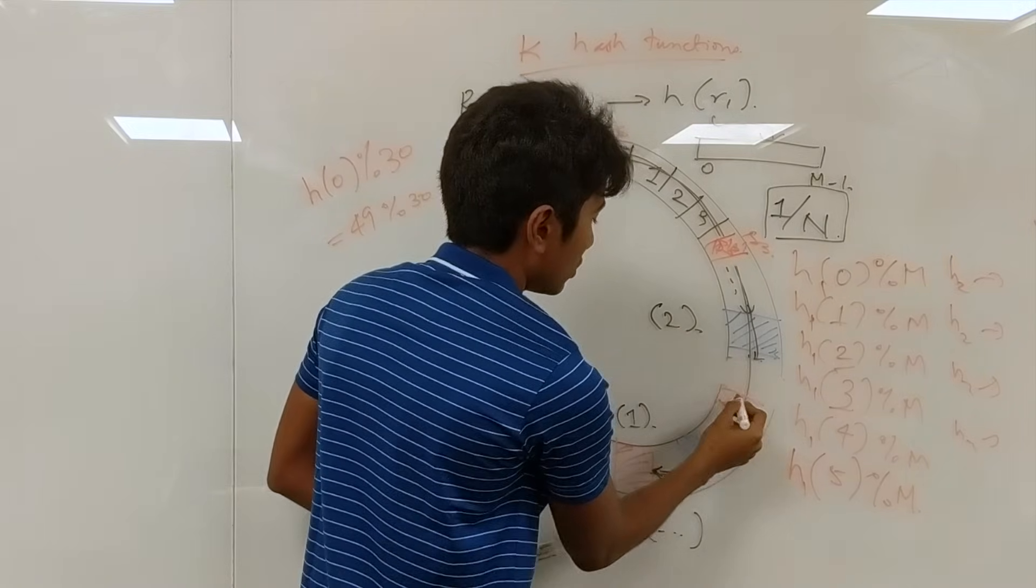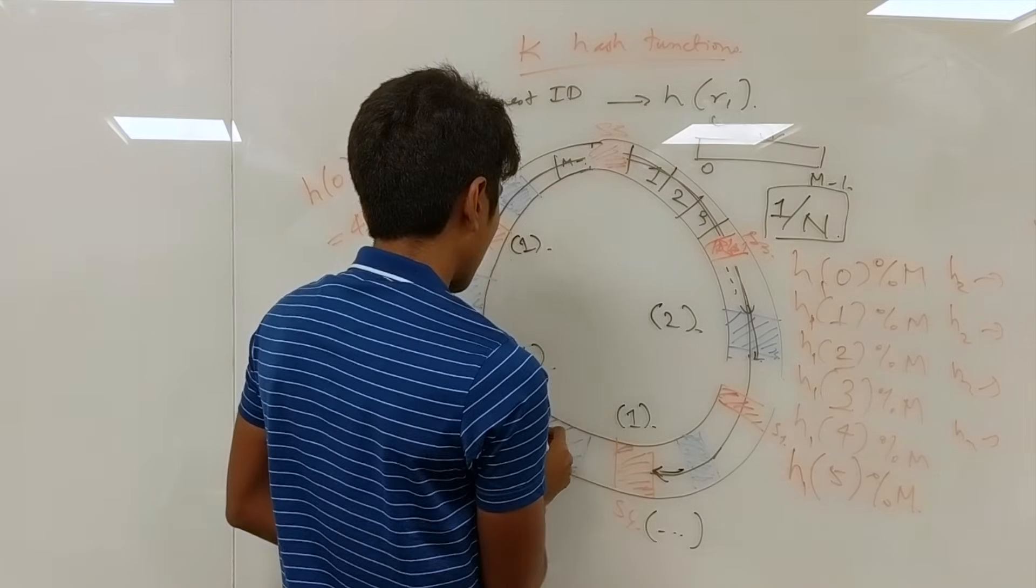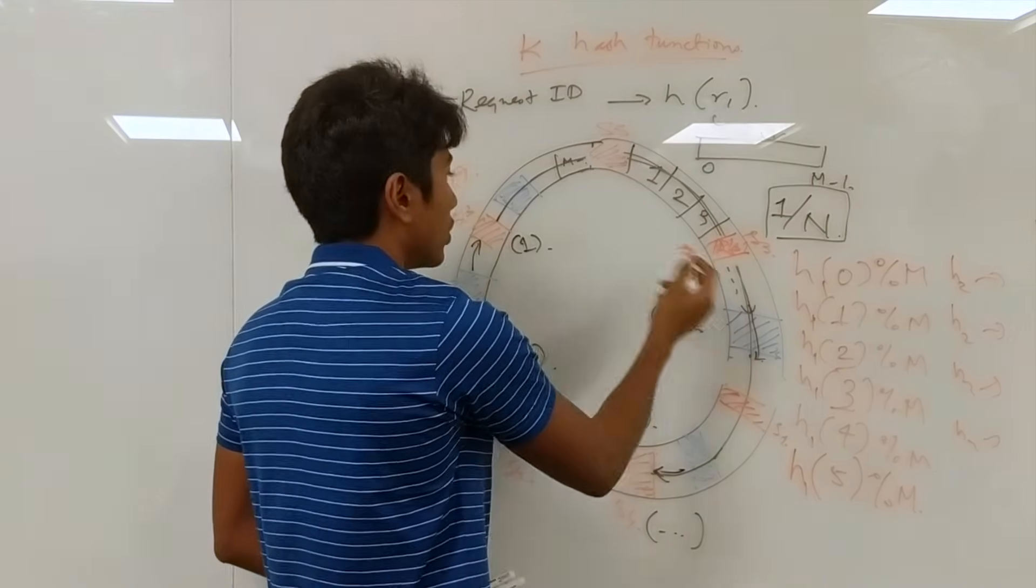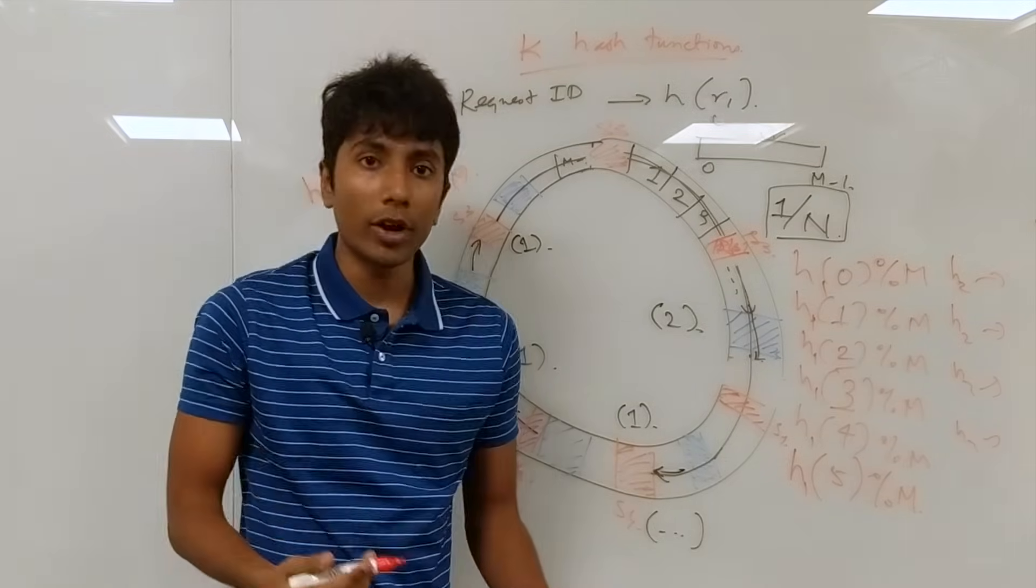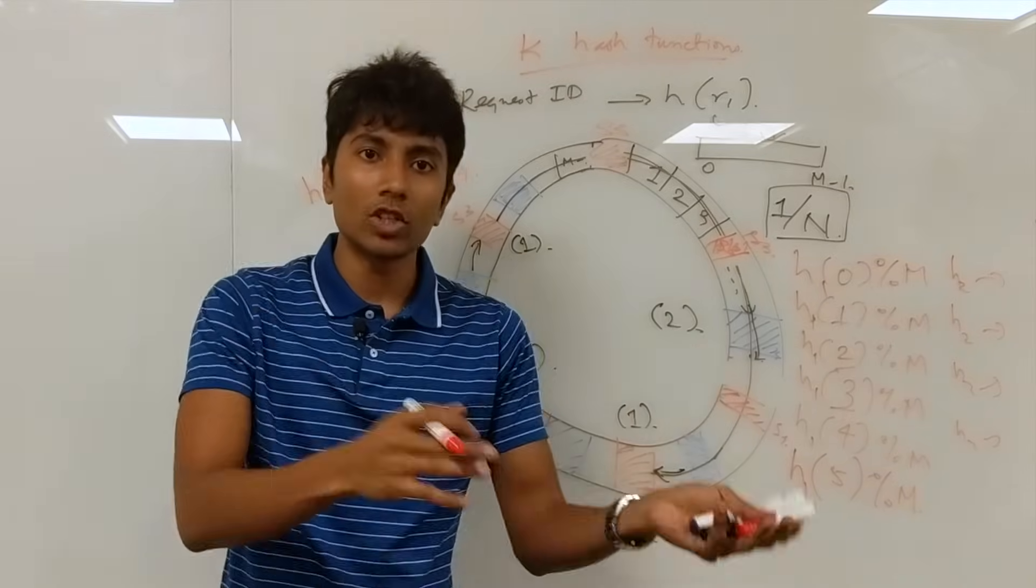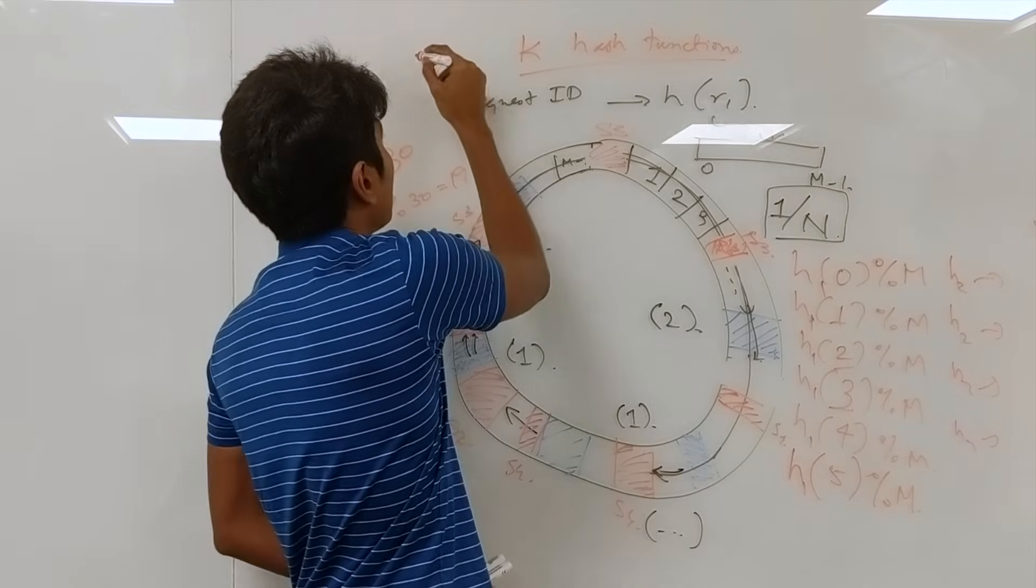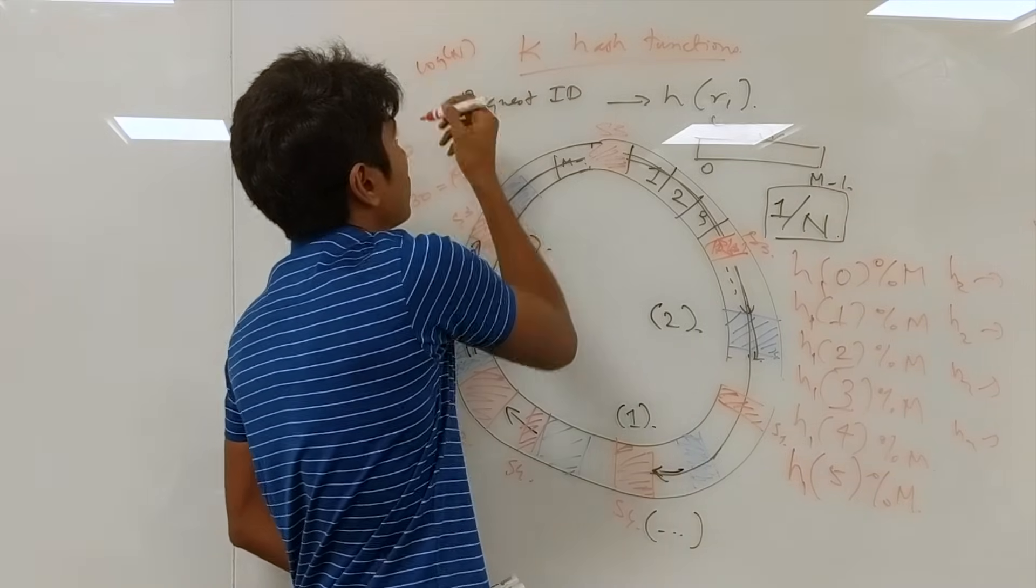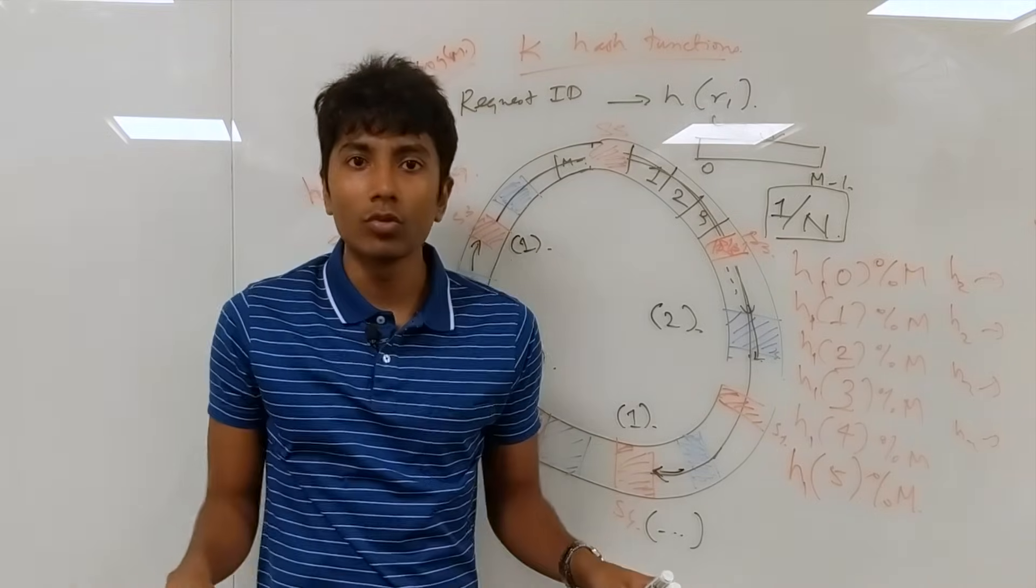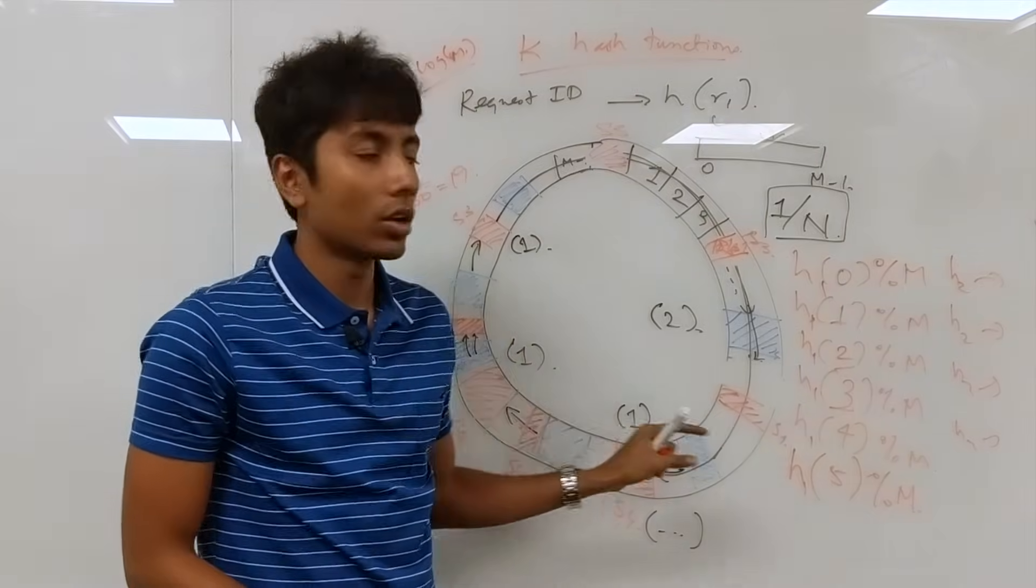What you are effectively seeing is if k is equal to 3, then you will have instead of just four points you have 12 points, and the likelihood of one server getting a lot of the load is much much lesser. If you choose the k value appropriately, for example log n or log m, you can almost entirely remove the chance of a skewed load on one of the servers.